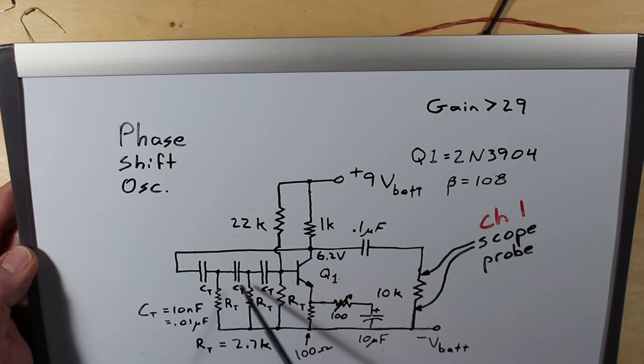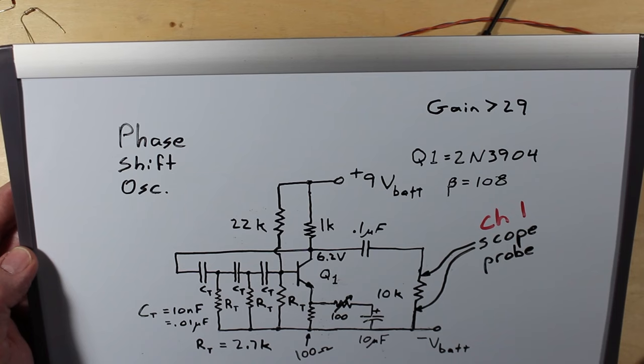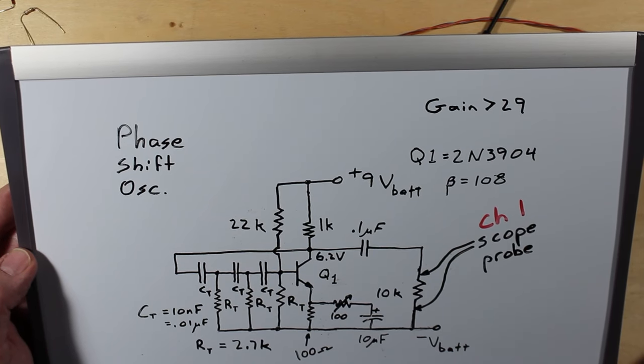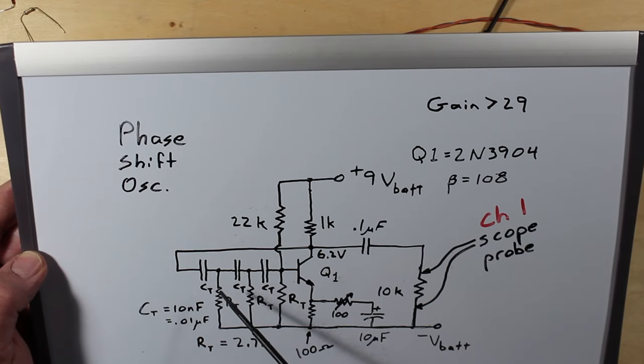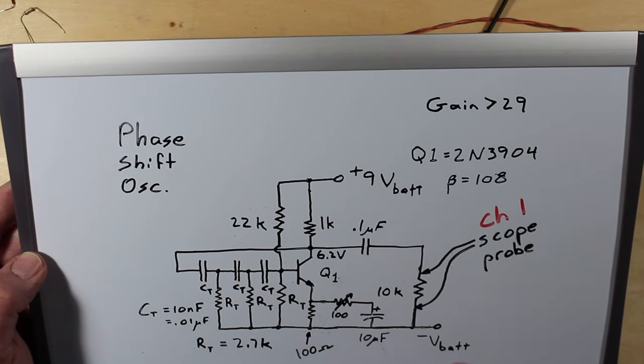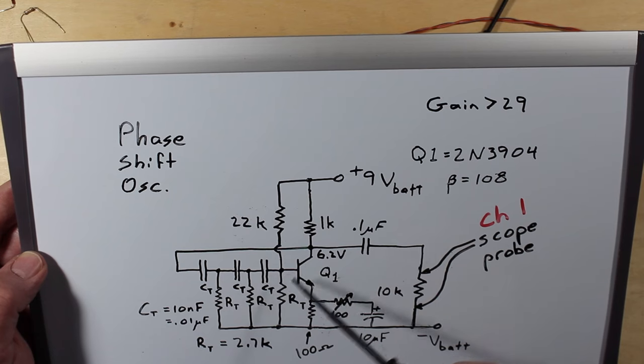We have three capacitors here, and you've probably read the capacitors have a 90 degree phase shift. Well, that's an ideal capacitor. These are real capacitors, and they don't give quite a 90 degree phase shift because they've got some inductance and various other things going on here.